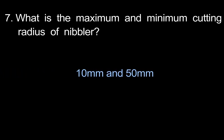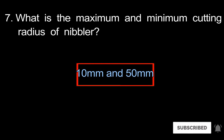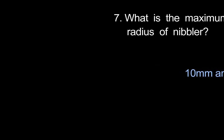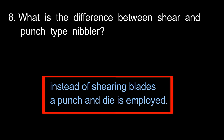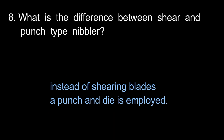What is the maximum and minimum cutting radius of a nibbler? What is the difference between shear type and punch type nibblers? The shear type nibbler uses shearing blades, while the punch type nibbler employs a punch and die instead.